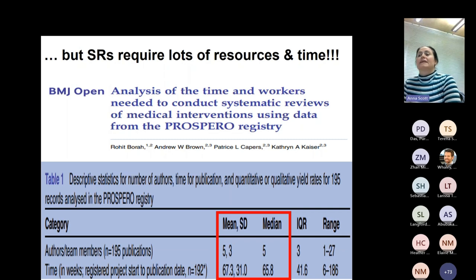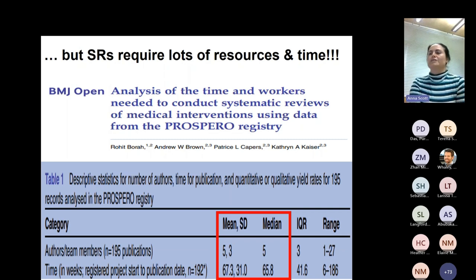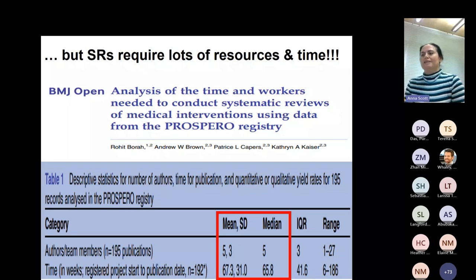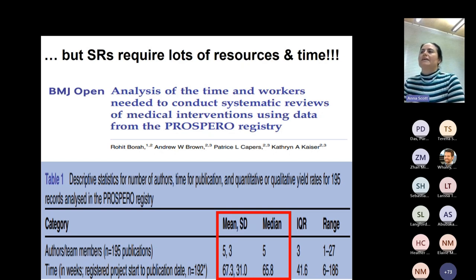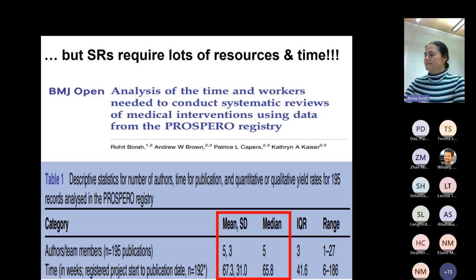They measured time from registration on PROSPERO to publication date. When we asked them to exclude the time the paper was at the journal, the answer was 41 weeks — still quite a long time. Forty-one weeks is about nine months.